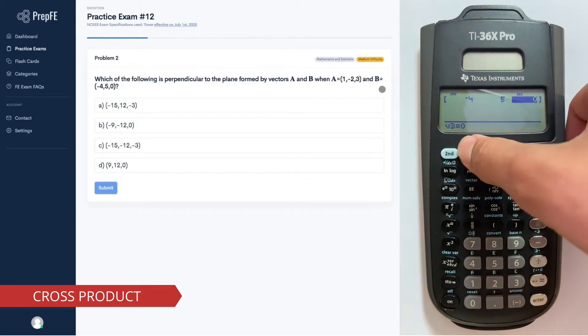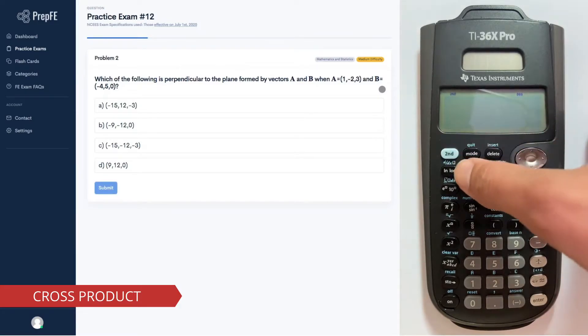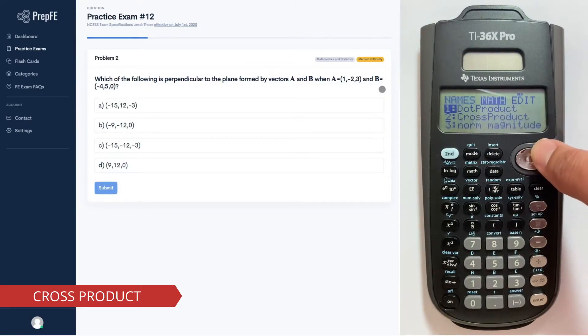We do Second, Mode to exit the screen. Now that we got all the vectors in the calculator, we can use the cross product function. Go to Second, Vector, Math, select cross product.